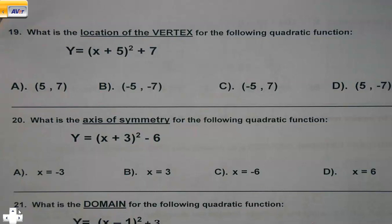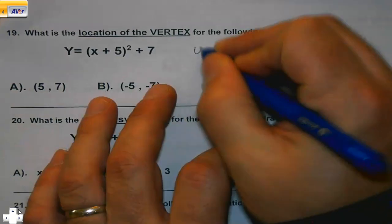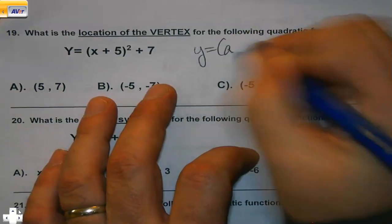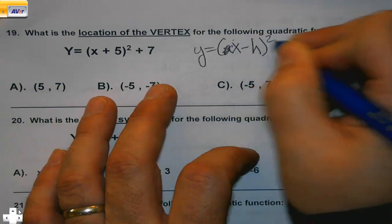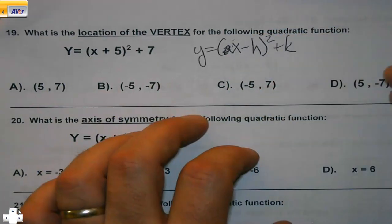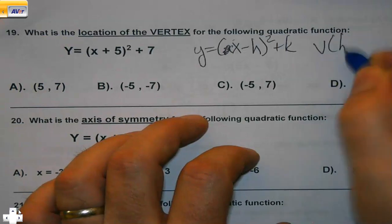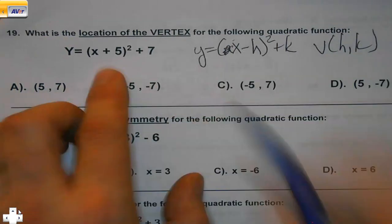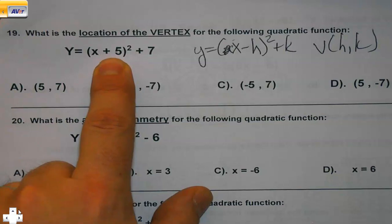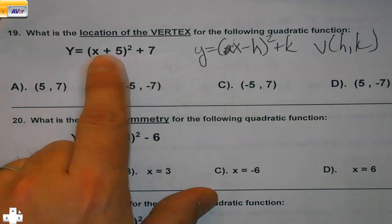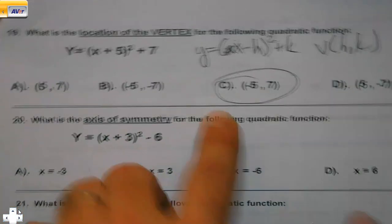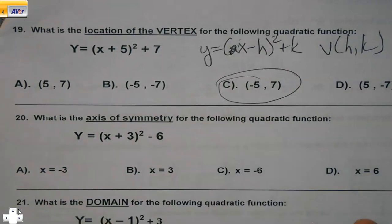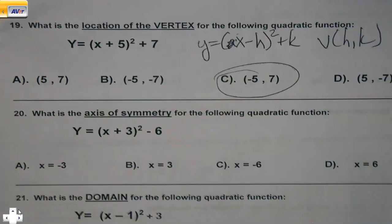What's the location of the vertex for the following quadratic? Reminder: when you are looking at x minus h squared plus k, when you're looking for your vertex, it's right here. It's the opposite of h, so negative 5, and keep k, so negative 5, 7. Be careful — those answers are real close to each other, just got to make sure we get that one right.